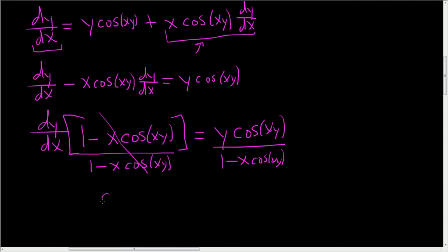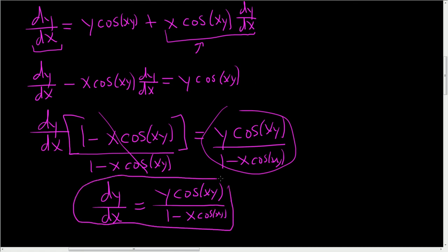And that's it. dy/dx is equal to the right hand side, all of this stuff: y cosine xy over 1 minus x cosine xy. And that is it.